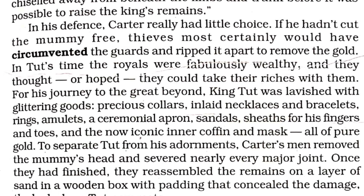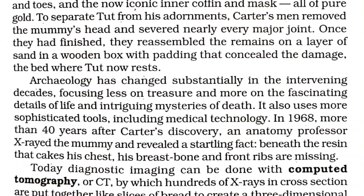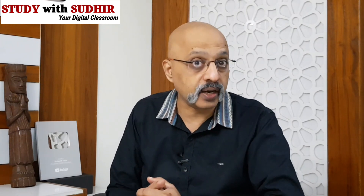In Tut's time, the royals were fabulously wealthy and believed they could take their riches with them. For his journey to the great beyond, King Tut was lavished with glittering gold, precious collars, inlaid necklaces and bracelets, rings, amulets, and the iconic inner coffin and mask — all of pure gold. To separate Tut from these adornments, Carter's men removed the mummy's head and severed nearly every major joint. Once finished, they reassembled the remains on a layer of sand in a wooden box with padding that concealed the damage.